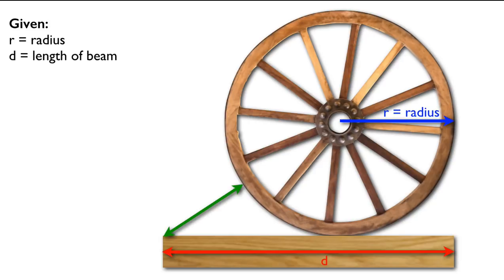Next we're going to tell you how far the wheel is from the left edge of the beam. Now that's the closest point on the wheel to the left edge of the beam, and we'll call that H.